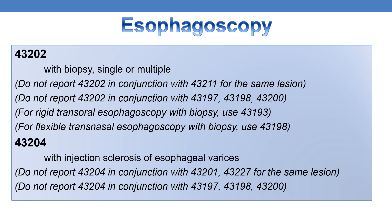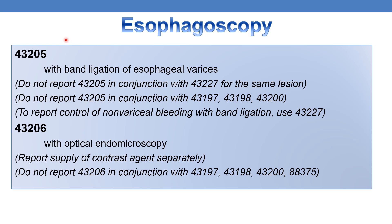For esophagoscopy, flexible, transoral, with injection sclerosis of esophageal varices, report 43204. For esophagoscopy, flexible, transoral, with band ligation of esophageal varices, the code is 43205. CPT 43206 is reported for esophagoscopy, flexible, transoral, with optical endomicroscopy; report the supply of contrast agent separately. Do not report 43206 in conjunction with 43197, 43198, 43200, and 88375.